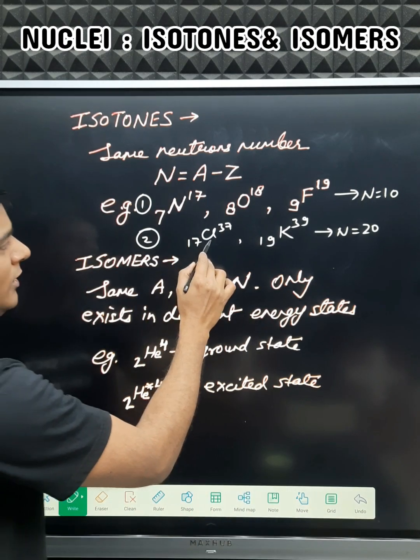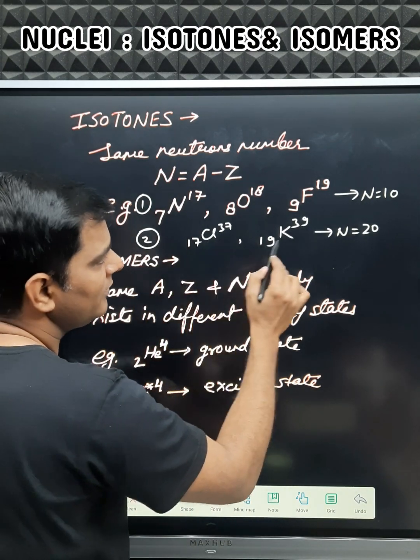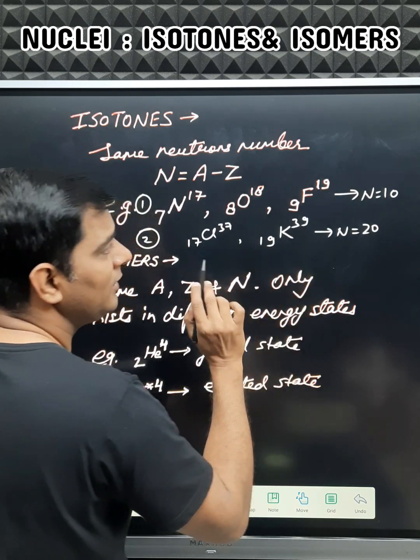Another example will be chlorine which is 17, chlorine 37, and 19 potassium 39.